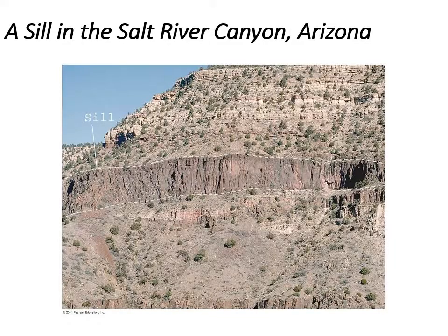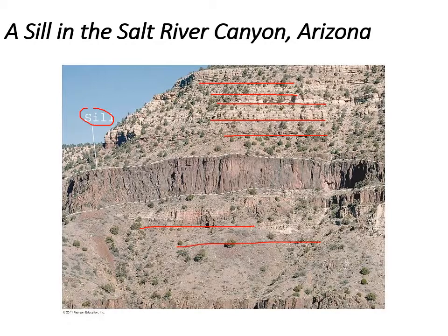Here's an example of a sill after the volcanic activity has stopped and all the rock has cooled. This is a canyon in Arizona. We can see layers of sedimentary rock above and below, but this big cliff area is igneous rock — an intrusion of magma in between sedimentary rock layers that cooled into a sill.